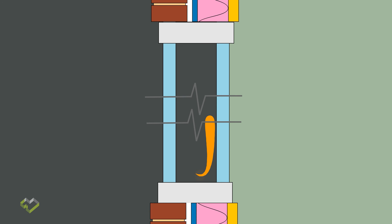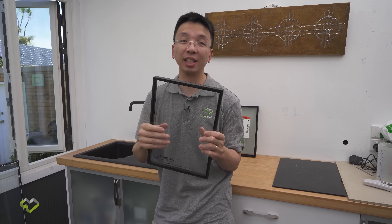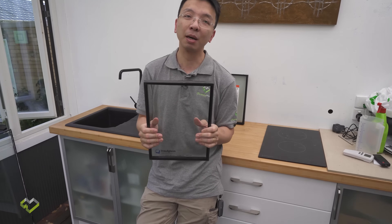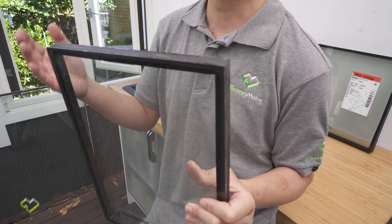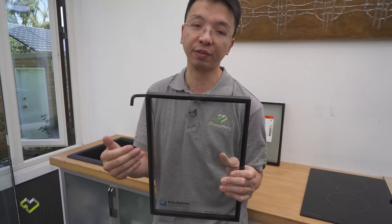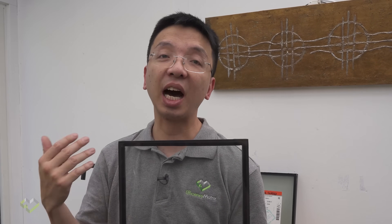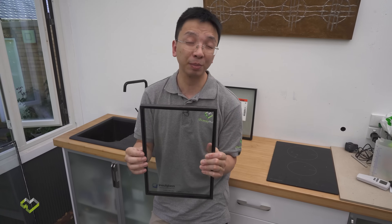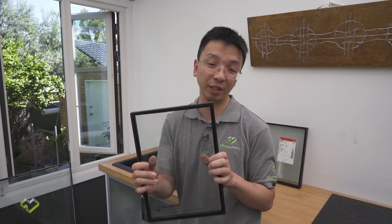In 99% of double-glazed units there is gas in the gap. Most commonly it is either normal air or argon gas, which behaves similarly to air but is heavier, making it harder to convect and reducing heat transfer. If you're willing to pay more, you can get a higher-performance noble gas called krypton — nothing to do with Superman — which is even heavier than argon, with an optimum gap between six and eight millimeters.